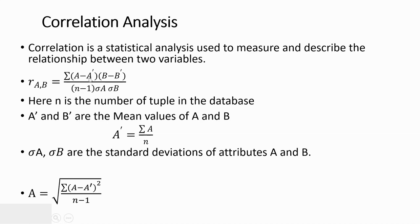Let us understand this equation clearly. Here, A is the attribute value and A-bar is the mean of the attribute value. A-bar is calculated as sigma A divided by N, where N is the total number of values. Similarly, B-bar is the mean of B. N minus 1 indicates the number of tuples in the database.